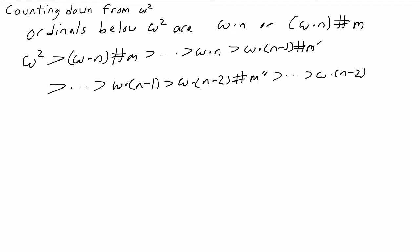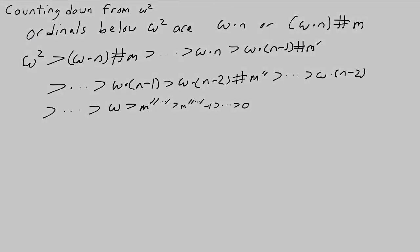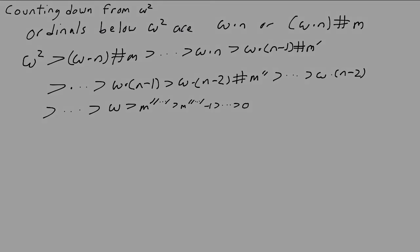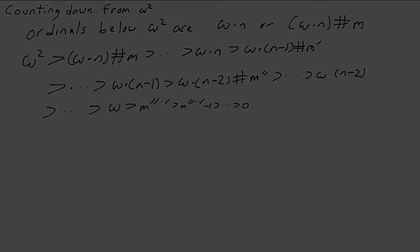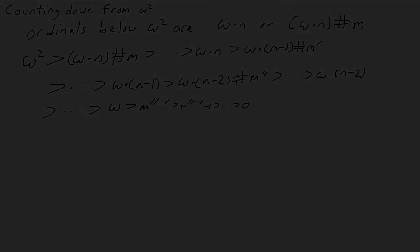After a finite number of steps, we have to lose an omega from our sum. We only started with n omegas, so after doing that n times we're at a finite number, and we know how many steps are left. That's why the ordinals up to omega squared are well-founded. Even though omega squared is this big infinite thing, when you decrease from omega squared you have to pick a fixed, finite number of omegas in your sum, and as you keep decreasing you eventually have to run out of those omegas.